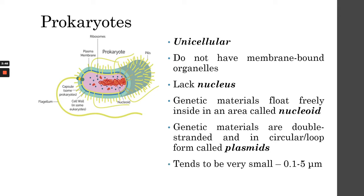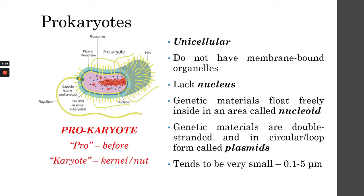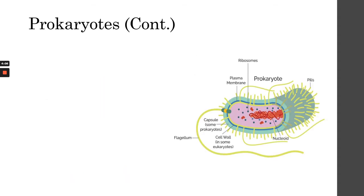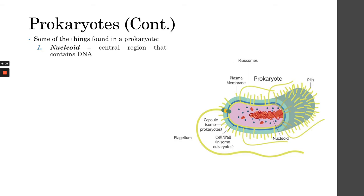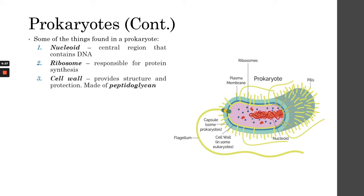Prokaryotes tend to be very small, from 0.1 to 5 micrometers. The word prokaryote means 'before nucleus' — 'pro' means before, 'karyote' means kernel — because they do not have a nucleus. Structures found in prokaryotes include the nucleoid, which is the central region containing DNA, and ribosomes, which are important in protein synthesis. They also have a cell wall, which provides structure and protection and is made up of peptidoglycan.